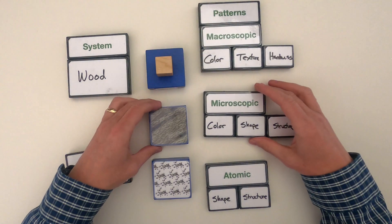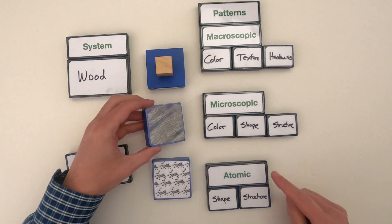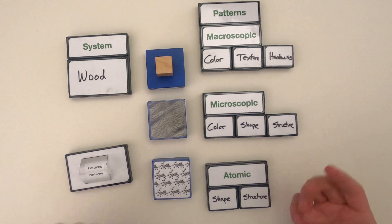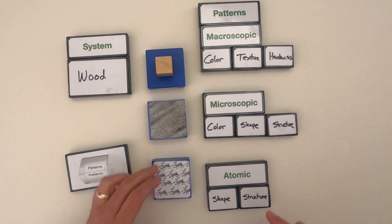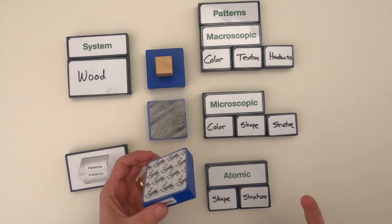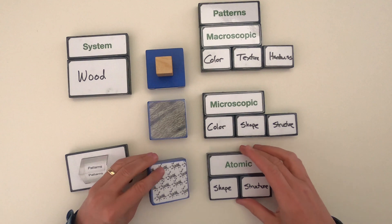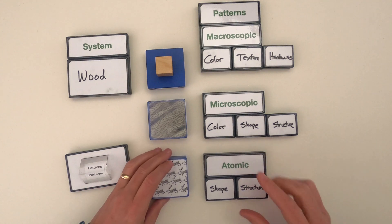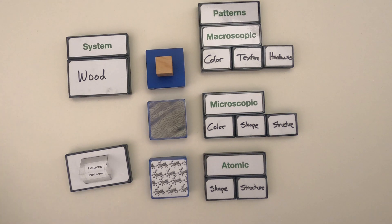Patterns we would see at the macroscopic scale could be the color, the texture of the material, or the hardness of the material — we'd have to feel it and look at the material to figure out what patterns we see. At the next level, under the microscope, we can still see colors but we'd be looking for what shapes and structures we see. At the atomic level, color is kind of meaningless, so we're really just looking for shape and structure.